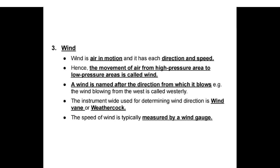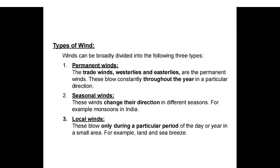Wind is air in motion; the movement of air from high pressure to low pressure areas is called wind. A wind is named after the direction from which it blows — e.g., wind blowing from the west is called westerly. The instrument for determining wind direction is a wind vane or weather vane; wind speed is measured by a wind gauge. Types of wind: permanent winds (trade winds, westerlies, and easterlies) blow constantly throughout the year in a particular direction; seasonal winds change direction in different seasons, for example monsoon in India; local winds blow only during a particular period of the day or year in a small area, for example land and sea breeze.